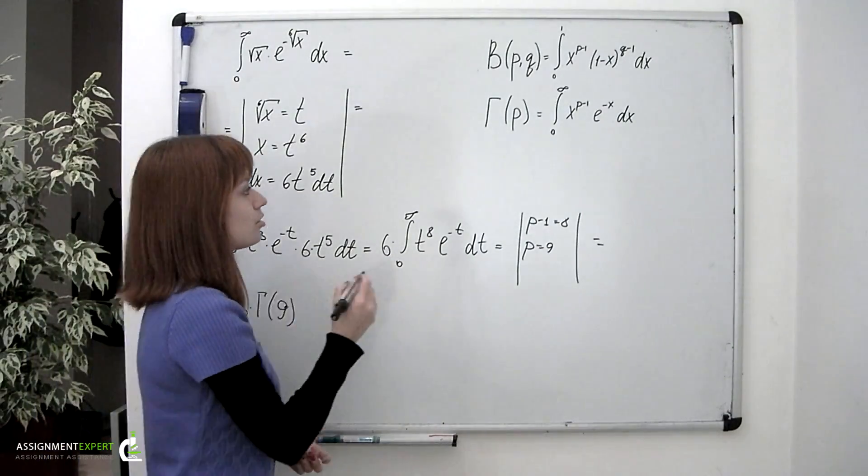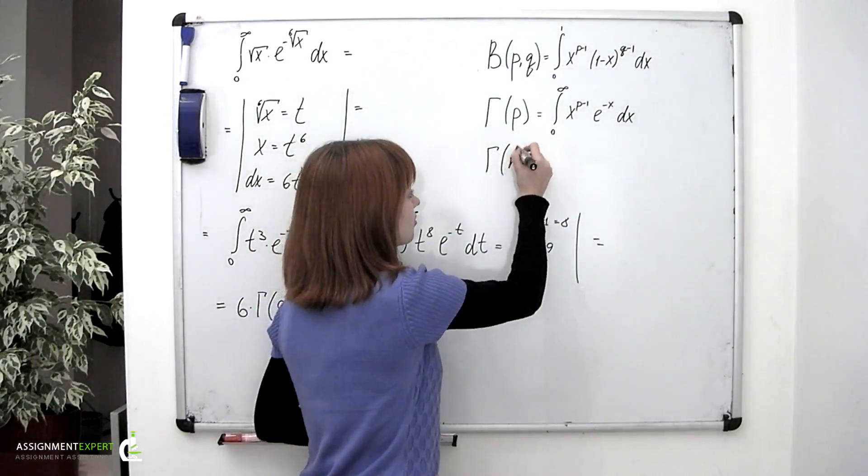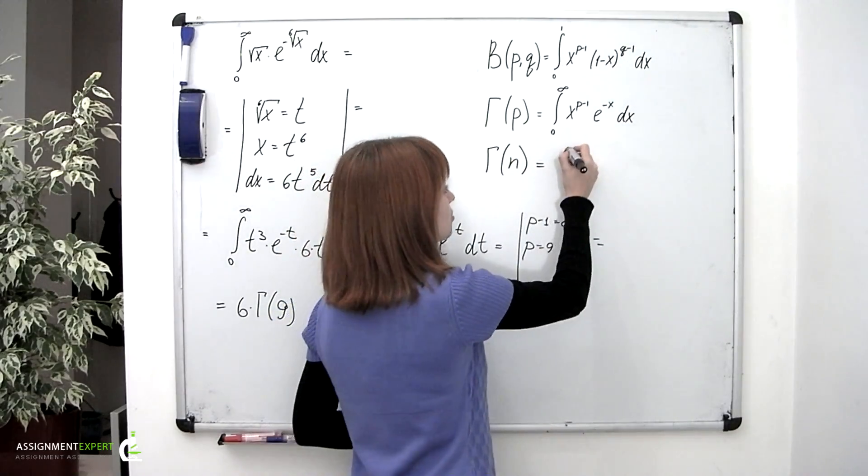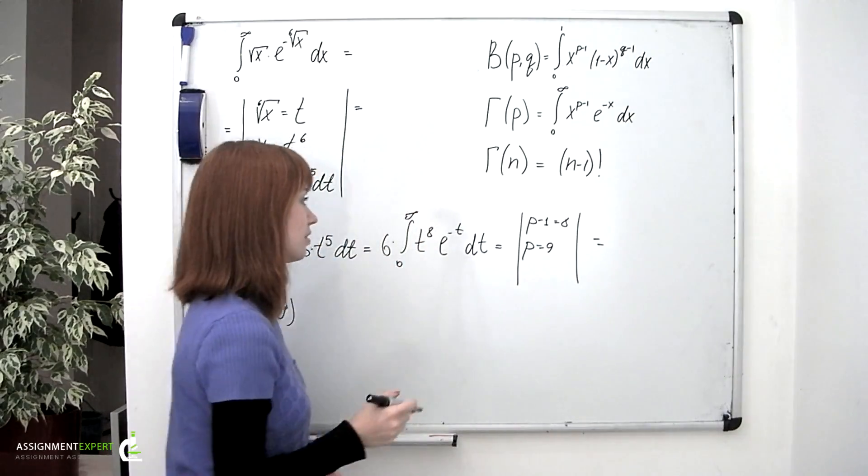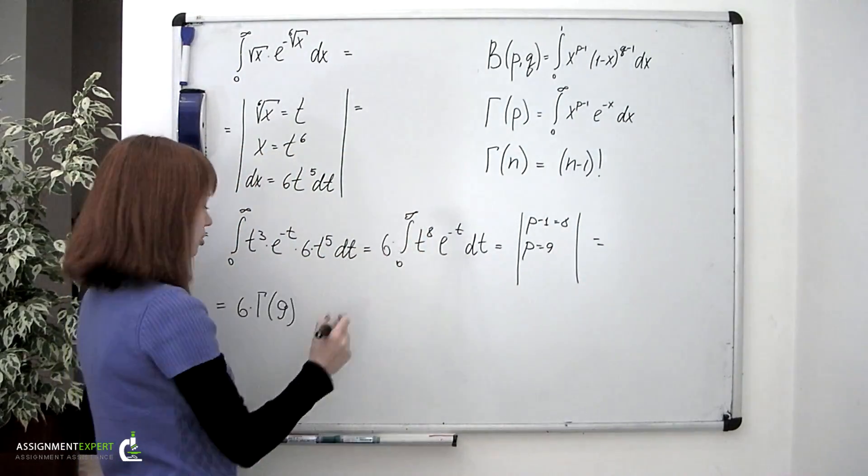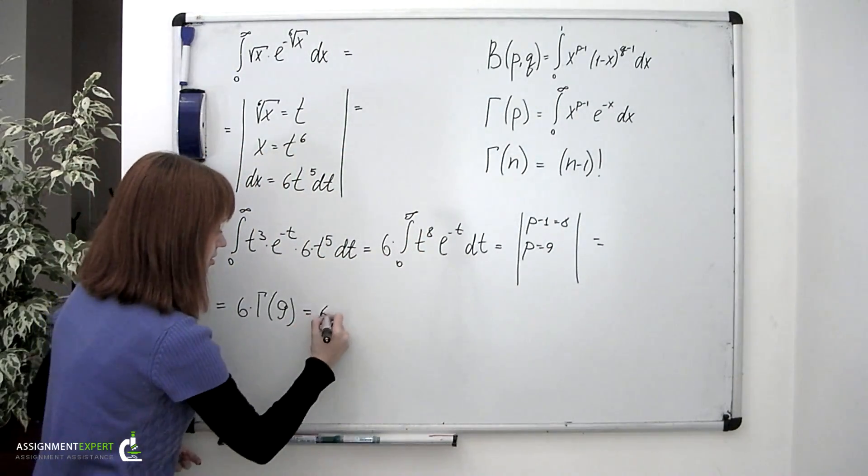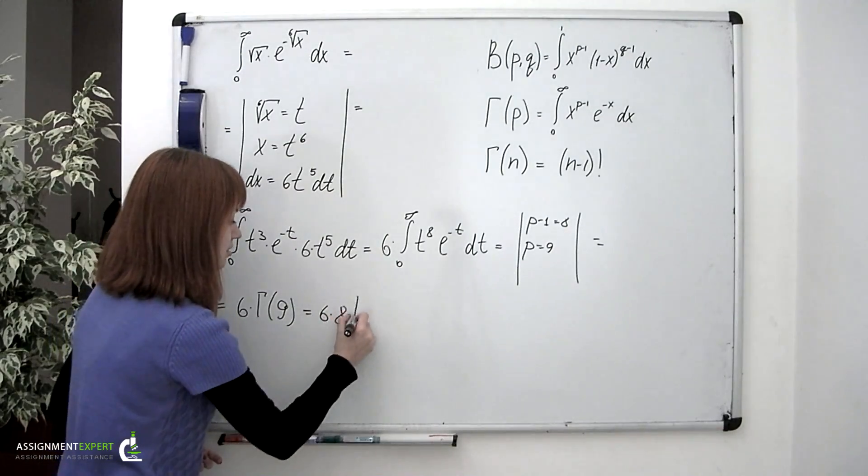We also know that gamma function of an integer is equal to an integer reduced by 1 factorial. Applying that formula, we obtain 6 multiplied by 8 factorial.